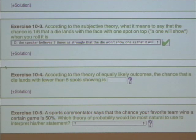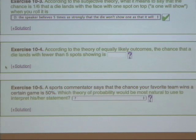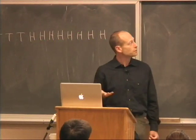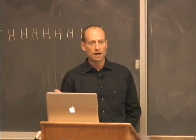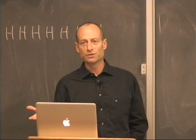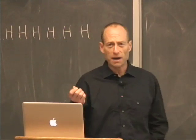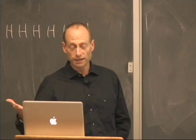According to the theory of equally likely outcomes, if I want to look at something that is a combination of simple outcomes — like the chance a die lands with fewer than five spots showing — I add the chances of the simple outcomes in that set. Fewer than five spots means showing 1, 2, 3, or 4 — that's four of the six equally likely outcomes. So the chance is 4/6 = 2/3, or about 66.6%.